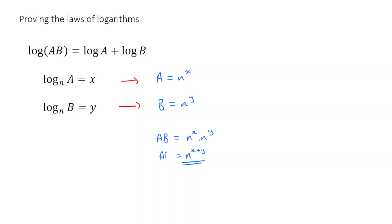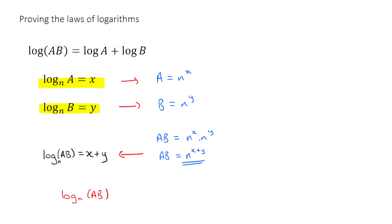Now, if a times b is equal to n to the power of x plus y, I can convert that back into logarithmic form. What I get is that the log base n of ab is equal to x plus y. I've just rearranged from exponential form back to logarithmic form. We know that x and y are log a and log b, so I can now rewrite this and say that log base n of ab is equal to log base n of a plus log base n of b. And there we go — we've proved our first rule.